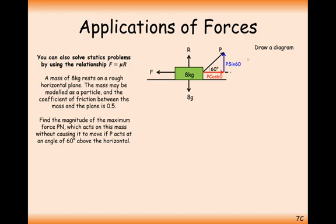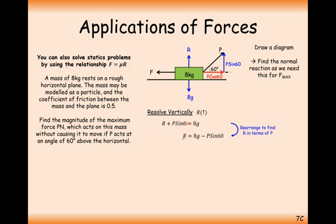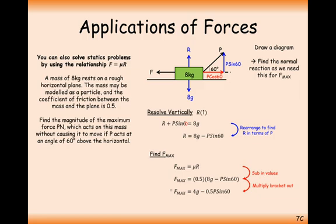Along the bottom it's going to be P cos 60, and upward it will be P sin 60. This P sin 60 is going to be involved in the calculation for R. Resolving vertically, taking upward forces equal to downward forces: P sin 60 plus R equals 8g. Rearranging for R: R equals 8g minus P sin 60. So to find the maximum value for friction, it's going to be 0.5 times all of this, giving friction max equal to 4g minus 0.5P sin 60.